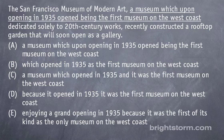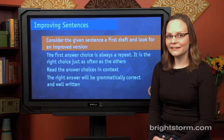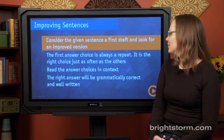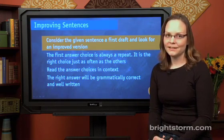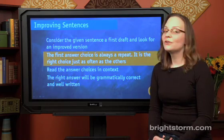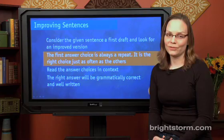The next question type is improving sentences. This one's pretty overwhelming, which is why you'd want to do it after identifying errors — it can take more time and be more confusing. First, you should consider the given sentence a first draft and go looking for an improved version among the answer choices. FYI, the first answer choice is always going to be a repeat of what's already underlined in the original sentence.